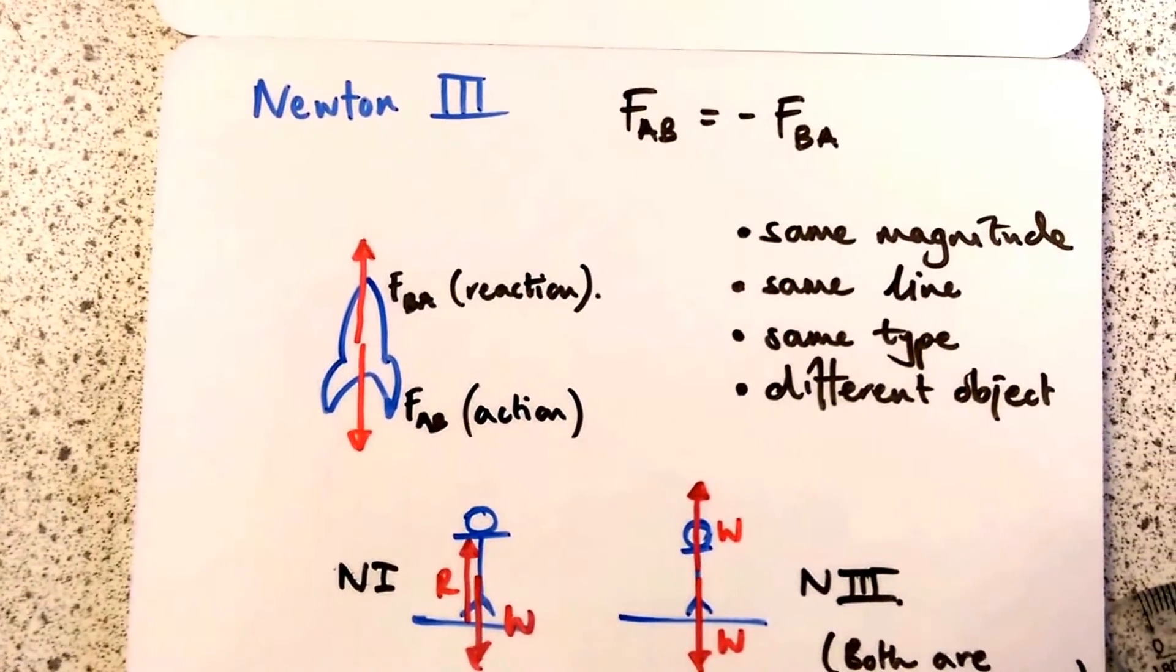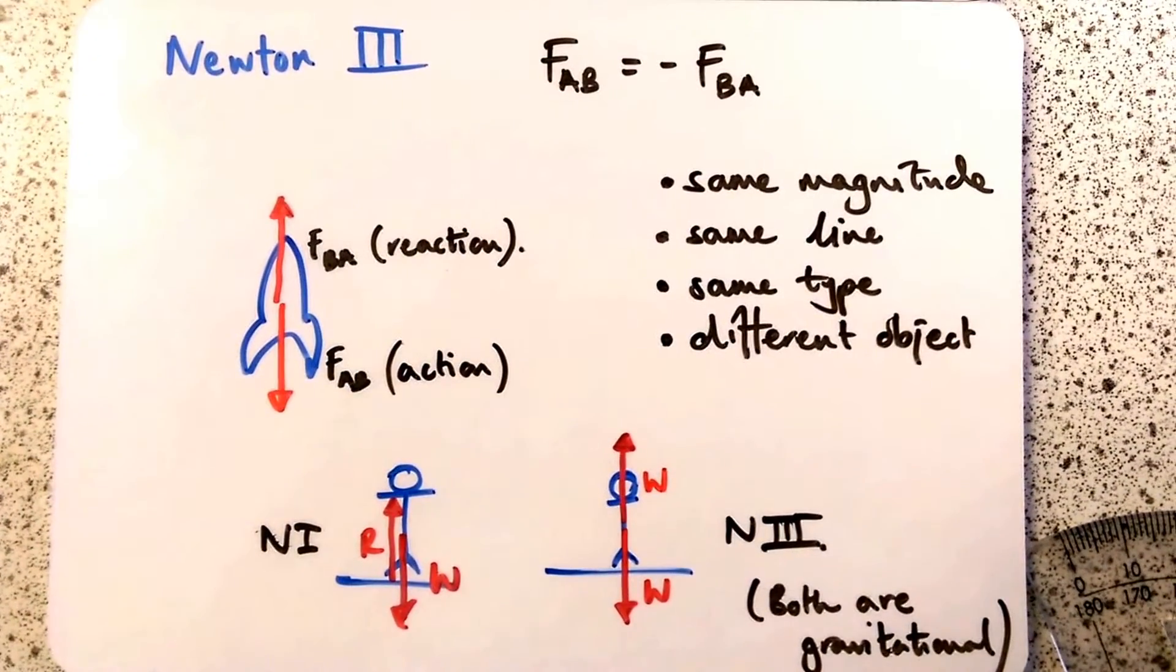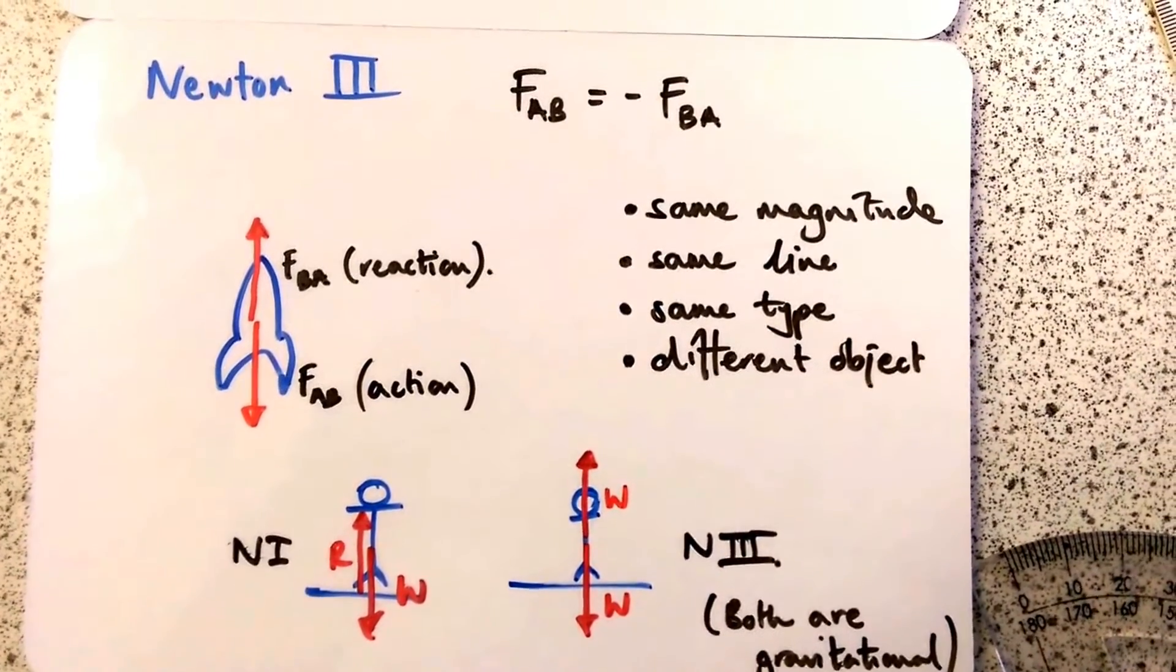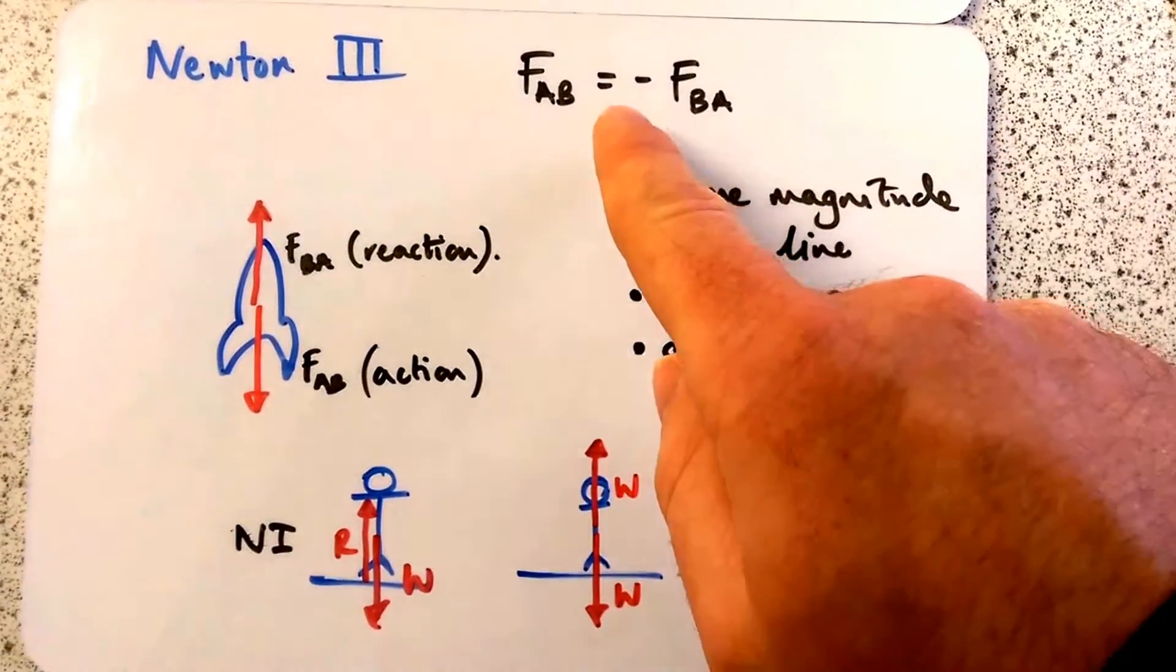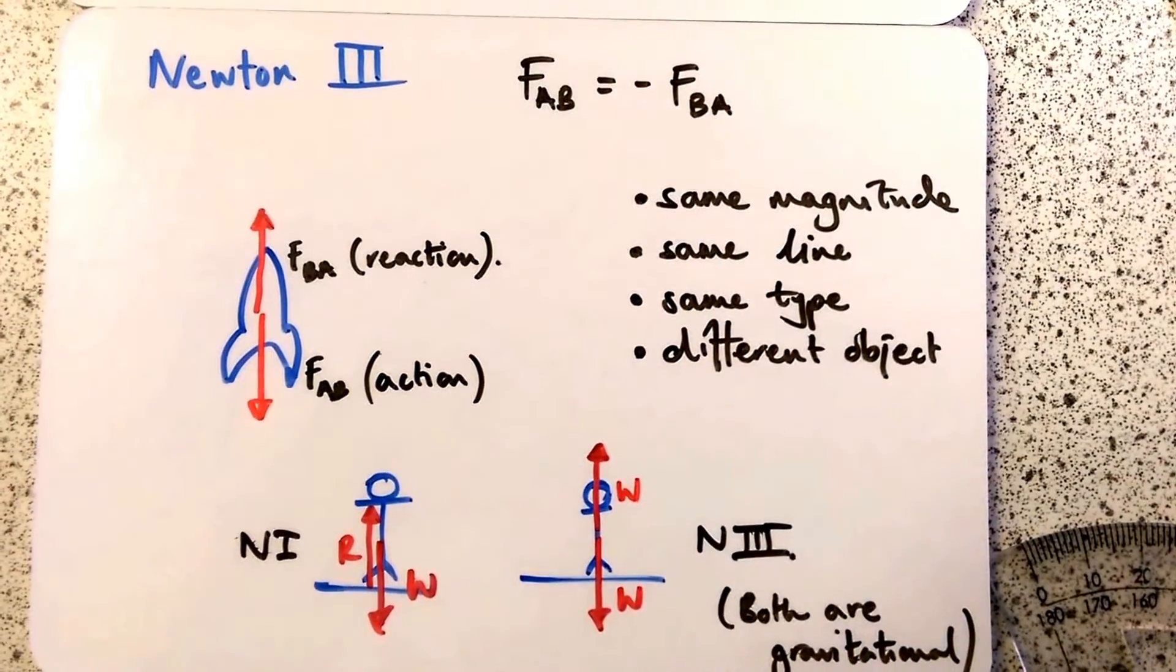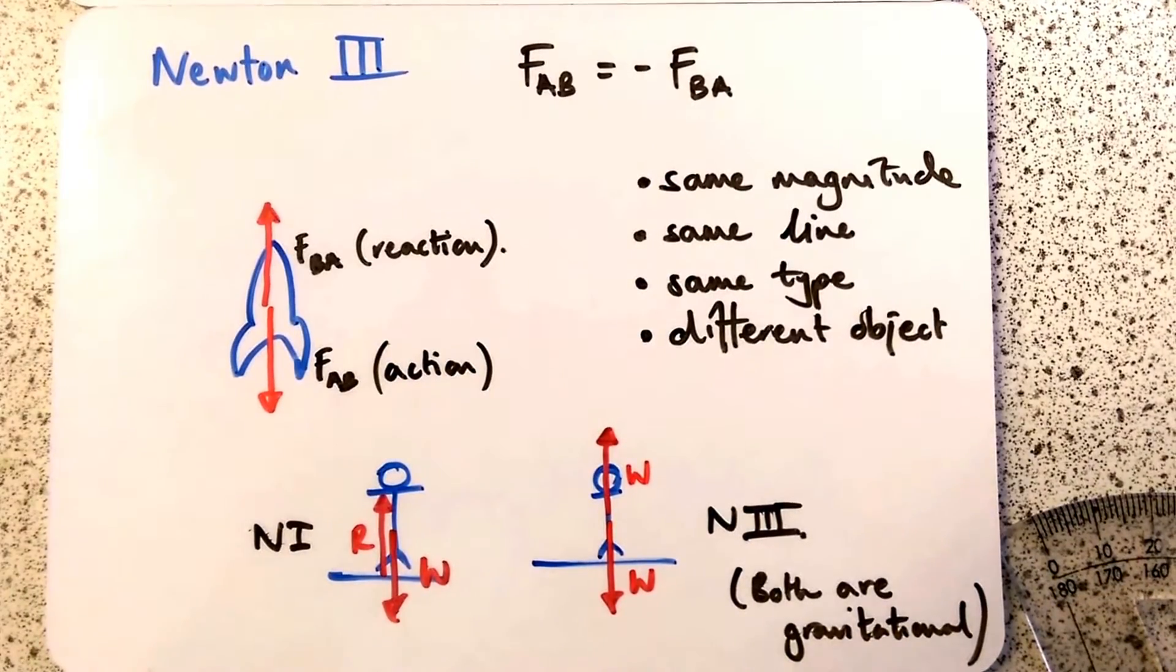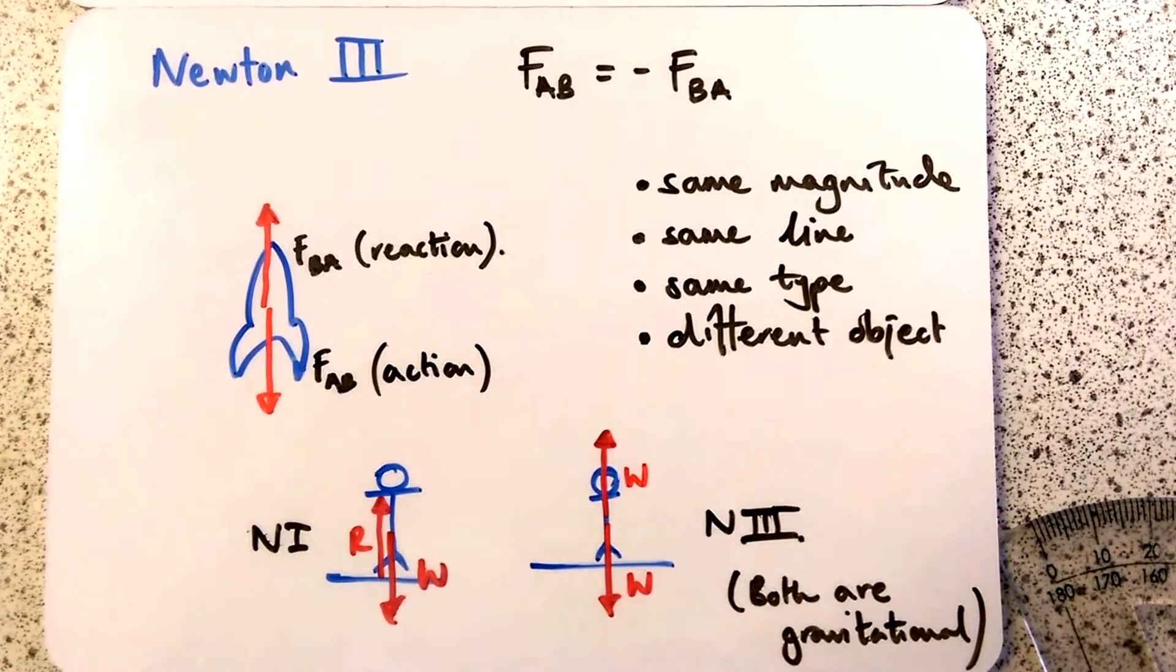Last one is Newton's third law - often quoted but not very well understood. Every action has an equal and opposite reaction. I like to notate it like this: the force from A to B is equal but opposite - that's the significance of the negative sign - to the force from B to A. If A exerts a force on B, then body B exerts the same but opposite force on body A.